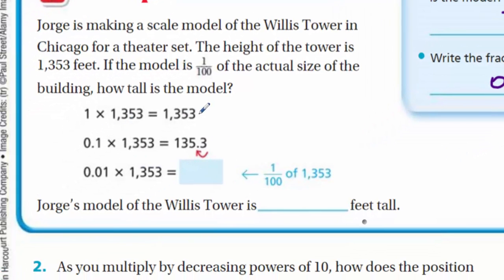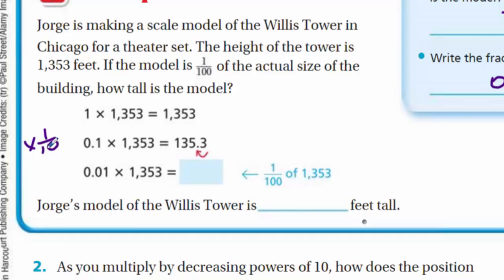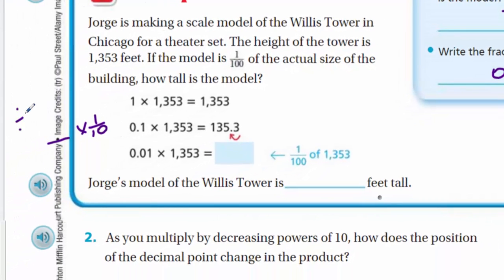We come over here and it shows the identity property again: 1 times 1,353 equals 1,353. Then 0.1 times 1,353 equals 135.3 — the decimal moved one place to the left. Now, 0.1 is one-tenth, and when we talk about one-tenth of a number, the opposite is happening — we're moving to the left. Multiplying by one-tenth is the same as dividing by 10 — they're called inverse operations, meaning opposite. Now we have one-hundredth, so the decimal place moves two times to the left, giving us 13.53.